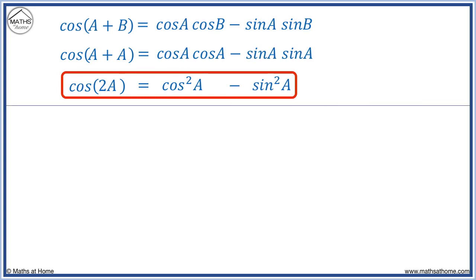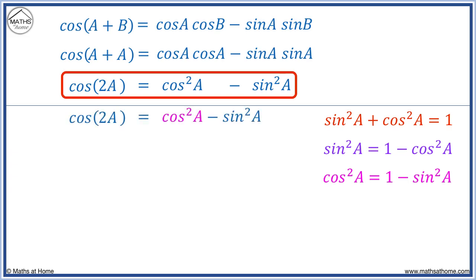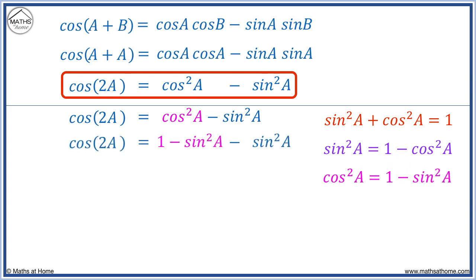Now, since sin²(a) plus cos²(a) equals 1, we can rewrite the double angle formula in two more ways. We know sin²(a) equals 1 minus cos²(a) and cos²(a) equals 1 minus sin²(a). Using the double angle formula, we substitute cos²(a) for 1 minus sin²(a) to get 1 minus sin²(a) minus sin²(a), which simplifies to 1 minus 2·sin²(a).